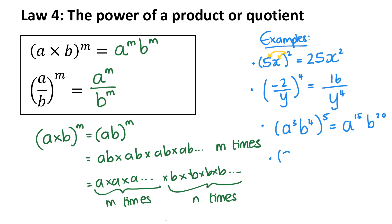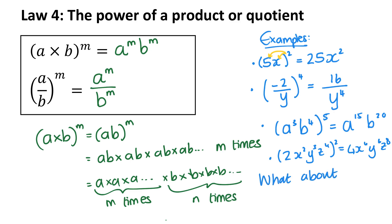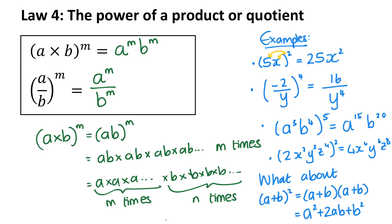You can have as many values in the bracket as you want. For example, 2x squared y cubed z to the power of 4, all squared, gives 4x to the power of 4, y to the power of 6, z to the power of 8. However, if you've got a plus b squared, would that be a squared plus b squared? In grade 9 you'd know that's a plus b times a plus b, which multiplies out to a squared plus 2ab plus b squared. This rule is only for multiplying and dividing. When adding terms inside a bracket, it does not follow the same rule.